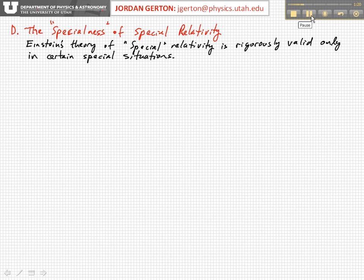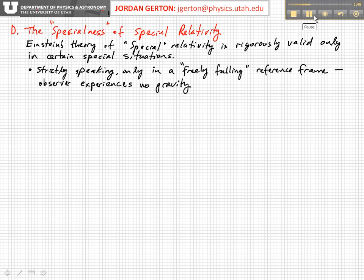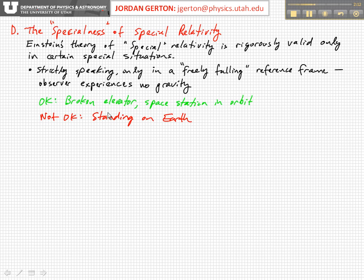Now let's take a brief moment to discuss the specialness of special relativity — that is, why is it called special relativity instead of just relativity? This is to distinguish it from Einstein's general theory of relativity. In Einstein's special theory of relativity, the predictions are only rigorously valid in certain very special situations: specifically, freely falling reference frames — those are reference frames where the observer experiences no gravity.